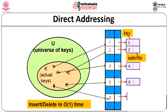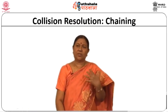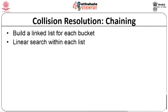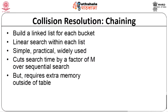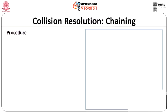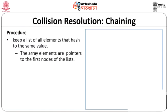Now let us look at collision resolution using chaining. Here you build a linked list for each bucket — conceptually similar to the array-per-bucket approach, but using a linked list instead. You have to do a linear search within each list. It is simple, practical, and widely used, cutting search time by a factor of m over sequential search. However, it requires extra memory outside the table. The procedure: keep a list of all elements attached to the same hash value; array elements are pointers to the first nodes of the linked list. New items are inserted at the front of the list.